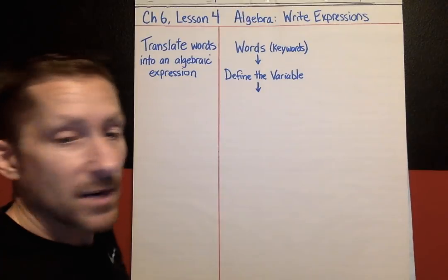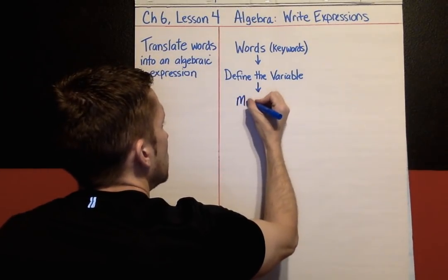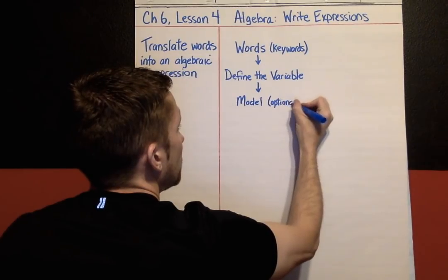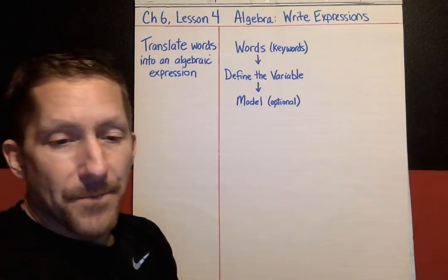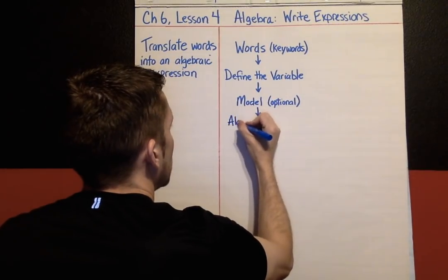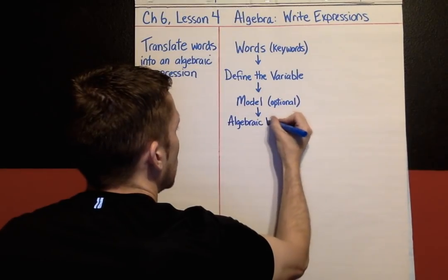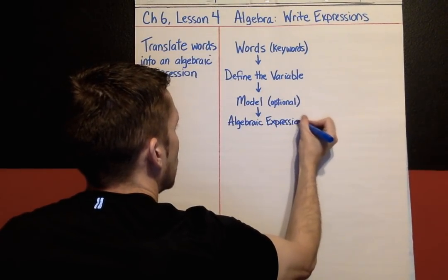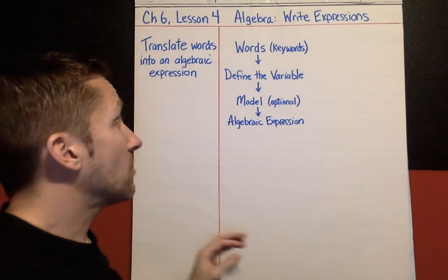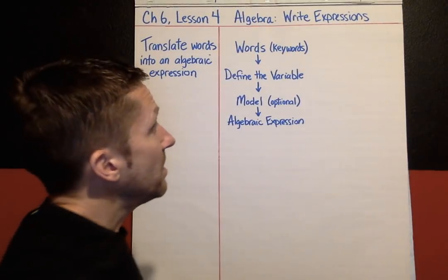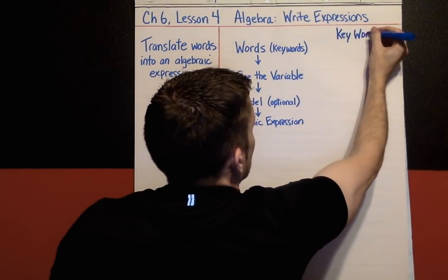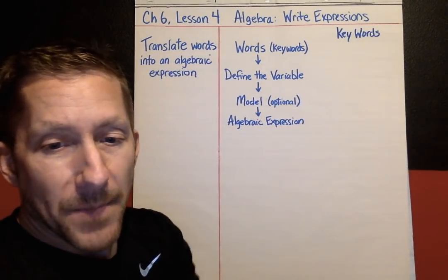When defining the variable, you can pick any letter you want. From there, after you define the variable, you're going to build a model like we did yesterday — this is optional. I'm going to put 'optional' here. If it helps your thinking, you can build a model. From that, we are going to write the algebraic expression. So this describes our process. Now I want to talk about some keywords.